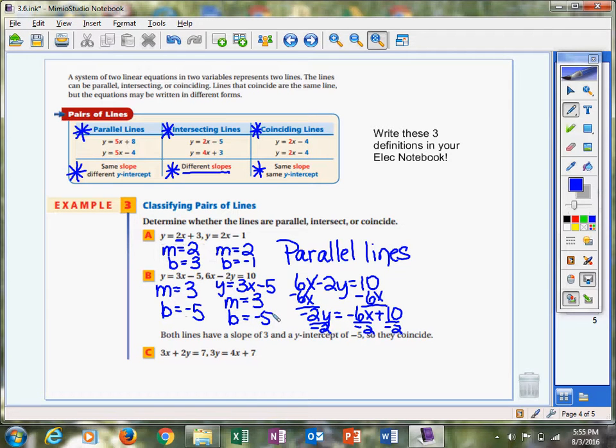This line has a slope of three and a y-intercept of negative five. What do we call lines? How do we classify them if they have the same slope and the same y-intercept, thus making them the same line? We would say these are coinciding lines. That's how you classify that. Do you see what you're looking for now? Same slope, different y-intercepts, those are parallel. Same slope, same y-intercept, those are coinciding.